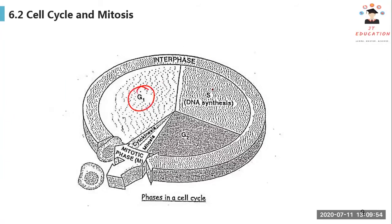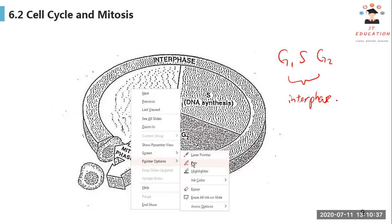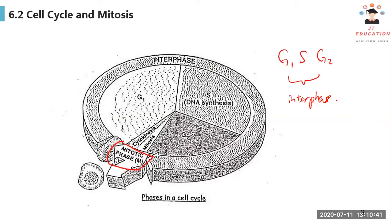G1 phase, S phase, and G2 phase is actually known as the interphase. And then we will have a mitotic phase, including mitosis and cytokinesis. Can you see most of the part, like more than 90% is interphase. And for mitotic phase, it's actually a small part, around like 10%. But majority is interphase.